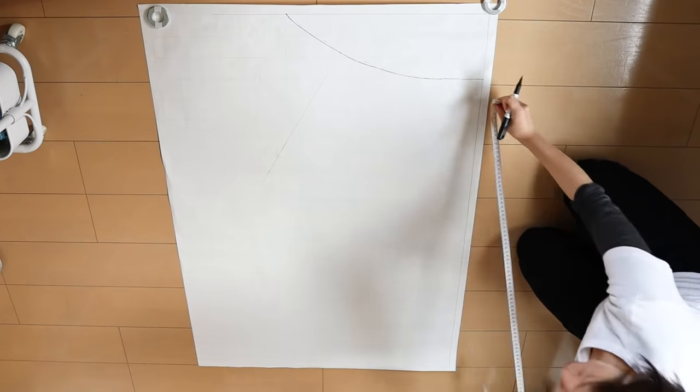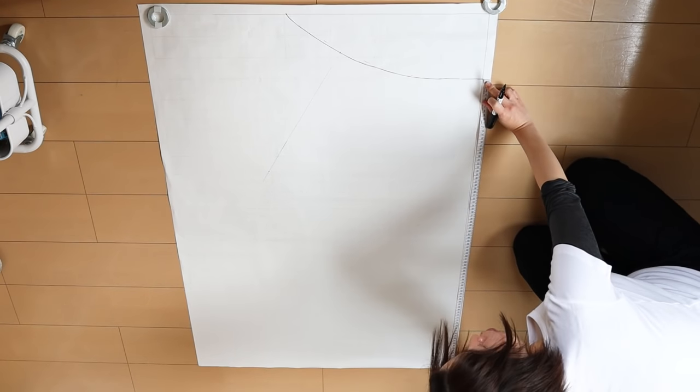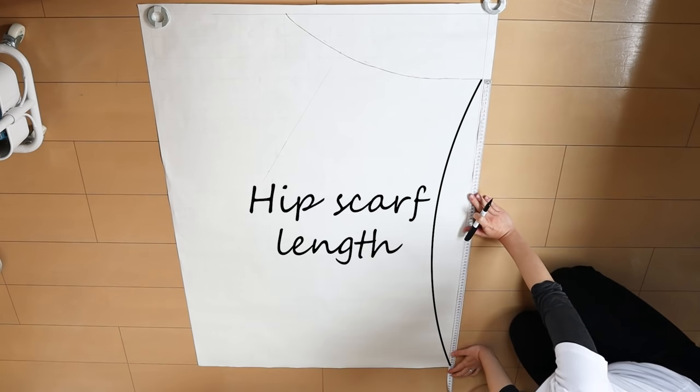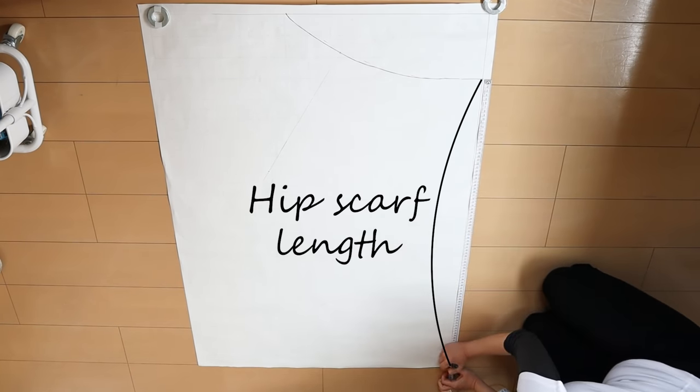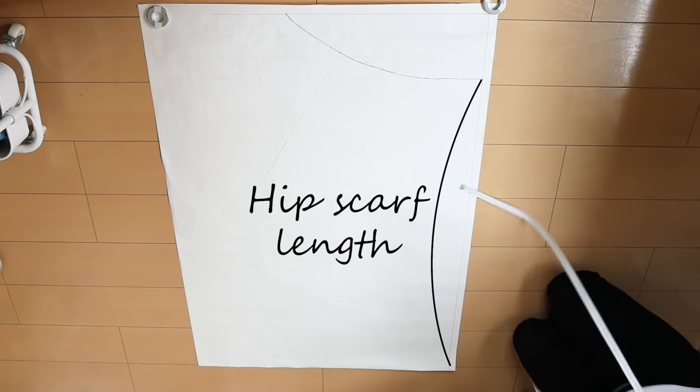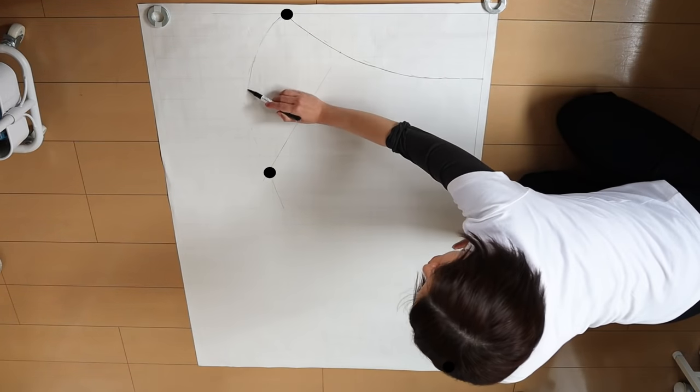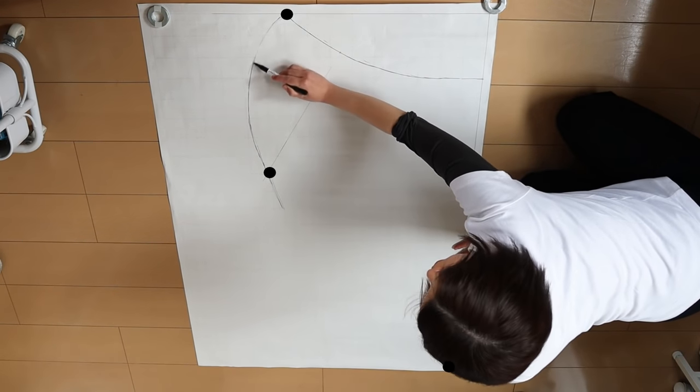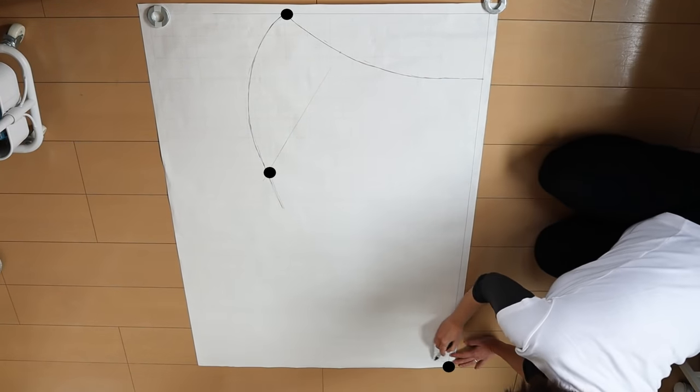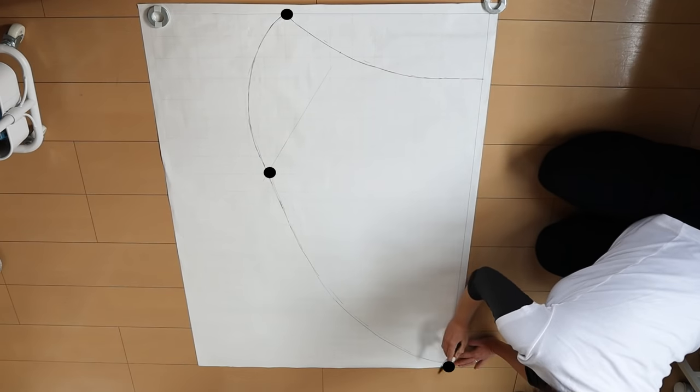Then back on the vertical line, from this 15 centimeter mark, measure your hip scarf length and mark it on the line. Now we'll connect the end of the curved line, the 35 centimeter mark, and the mark on the vertical line. Start out with a gentle C curve between the first two marks and try to connect it to the last mark smoothly.